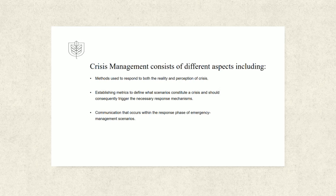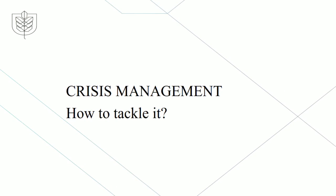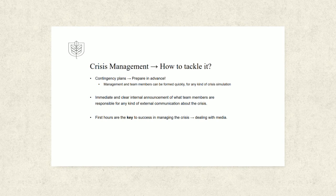Numerous points can be included in the crisis management plan, but we are going to discuss the six most important points that need to be included in the plan in order to be successful. First, prepare contingency plans in advance — things can form at very short notice, so rehearsing crises of various kinds is essential. Second, immediately and clearly announce internally what team members will be responsible for communications about the crisis to the outside world.